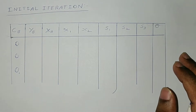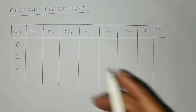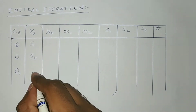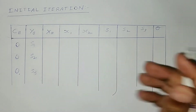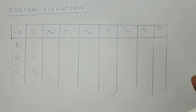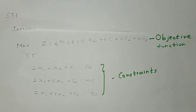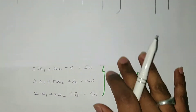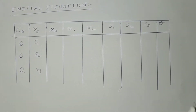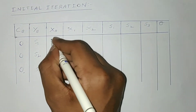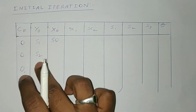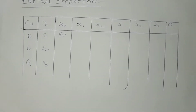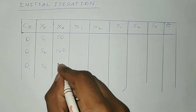yb consists of the slack variables: s1, s2, and s3. xb is the right-hand side of the constraints. In the first constraint, the right-hand side is 50; in the second it's 100; and in the third it's 90. So xb values are 50, 100, and 90.